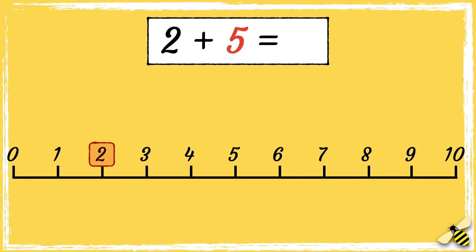we need to jump 5 digits to the right. 1, 2, 3, 4, 5. We've landed on 7. So 2 add 5 equals 7.